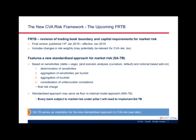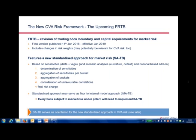The FRTB approach for market risk introduces a new standardized approach, the SA-TB, which is based on sensitivities. First, sensitivities are determined for certain risk buckets; then sensitivities are aggregated within those risk buckets; and then the final capital risk charge is calculated accounting for correlation between buckets. Every bank has to use this standardized approach, and even those using an internal model approach must also apply it, which will probably also be a regulatory floor.